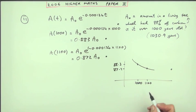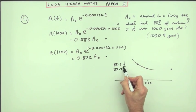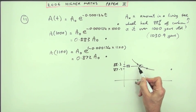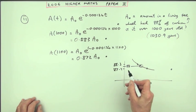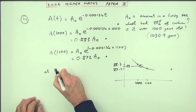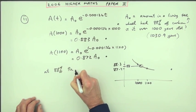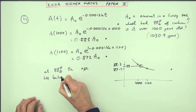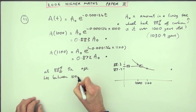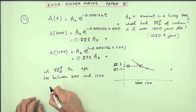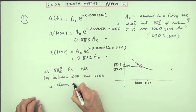And then finally having your target of 88% here, you would then make a statement. And that statement would be at 88% the age lies between 1000 and 1100 which means the claim is true.